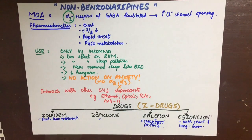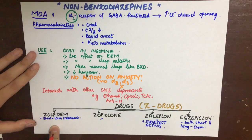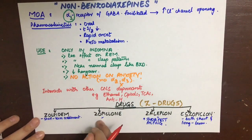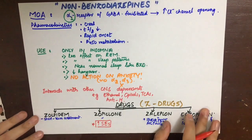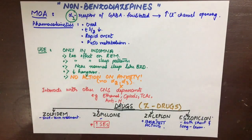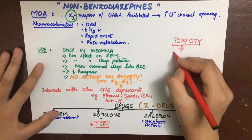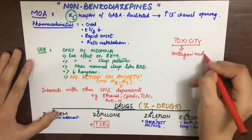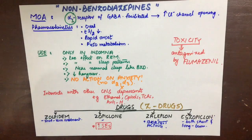Zopiclone has side effects including headache, drowsiness, GI disturbances, and a metallic taste in the mouth. The others share similar CNS depressing effects. In cases of toxicity, non-benzodiazepines can be antagonized by flumazenil, since they attach to the benzodiazepine receptors.